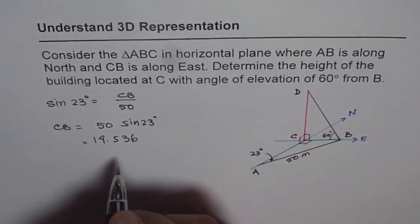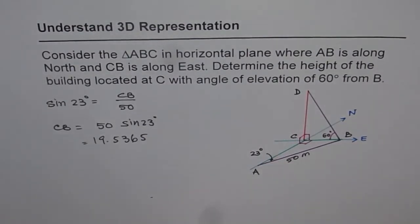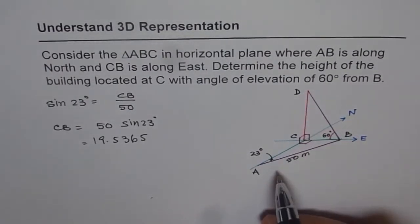It is good to keep it to four decimal places. It is 19.5365, so let's keep it four decimal places. Now, let's solve in triangle DCB. Let's find DC.